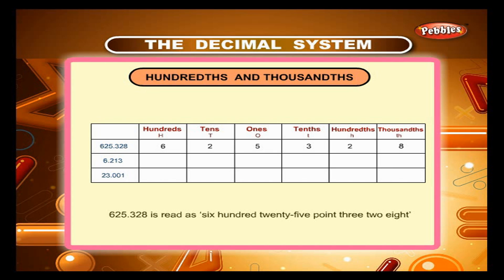625.328 is read as six hundred twenty-five point three two eight, and not as six hundred twenty-five point three hundred twenty-eight.